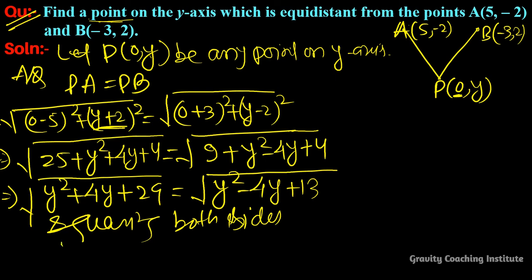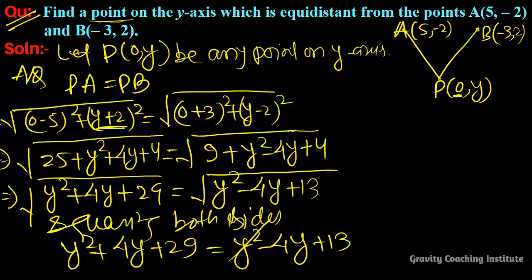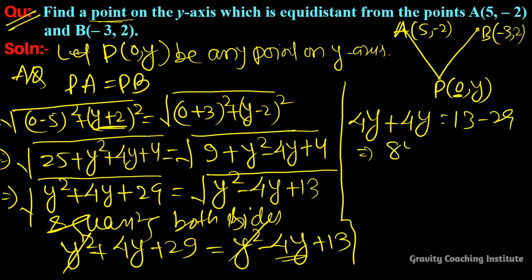Then we get y² + 4y + 29 = y² - 4y + 13. So y² and y² cancel. Moving -4y to the right side gives 4y + 4y, and 13 - 29, so 8y = -16.